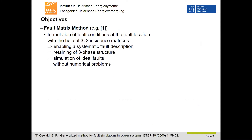One method which avoids these mentioned problems is the unified fault matrix method. Using this method, the formulation of fault conditions at the fault location is carried out with the help of three-by-three incidence matrices. By this, a systematic fault description is enabled, the three-phase structure is retained, and ideal faults are simulated without numerical problems.